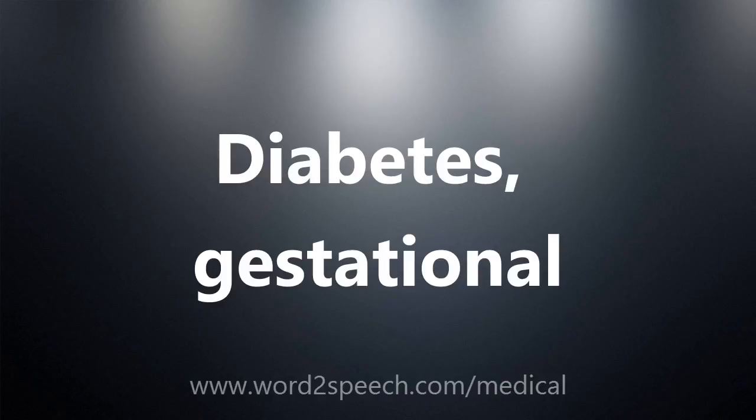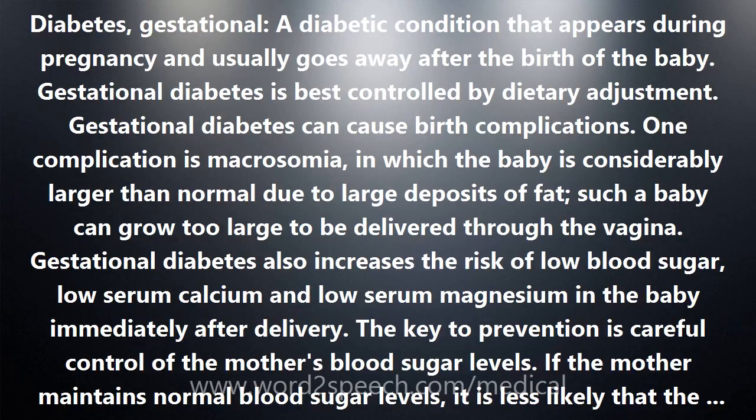Diabetes, gestational. A diabetic condition that appears during pregnancy and usually goes away after the birth of the baby. Gestational diabetes is best controlled by dietary adjustment. Gestational diabetes can cause birth complications.